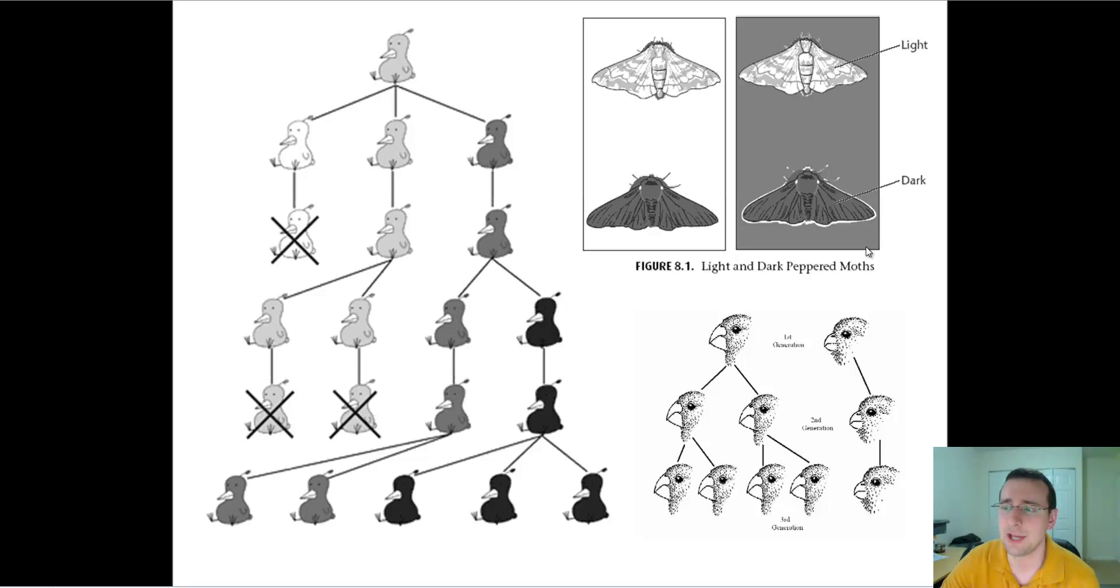Now we're going to talk more about selection and how it works in another section of this lecture series, and we'll also talk about some kinds of math that can be done with population genetics to calculate the effect of selection over a few generations.